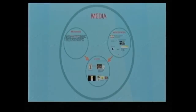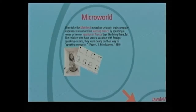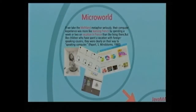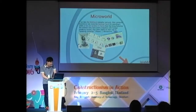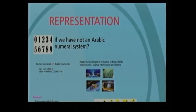Where do they learn? The medium is very important in constructionism. We also developed a representation system. If we had another number system without Arabic numerals, we would have to write 337 as CCC, XXX, VII. The Arabic numeric system influenced broad fields — mathematics, science, technology, and others. We are interested in 3D representation.